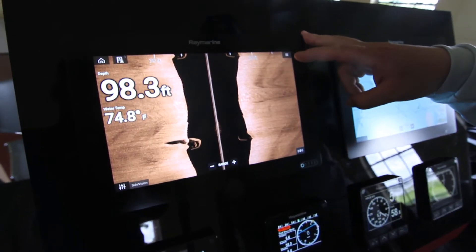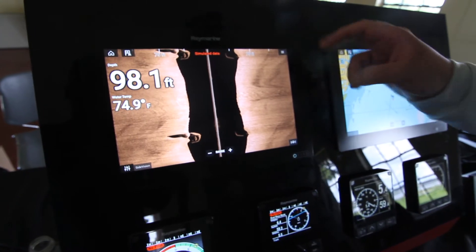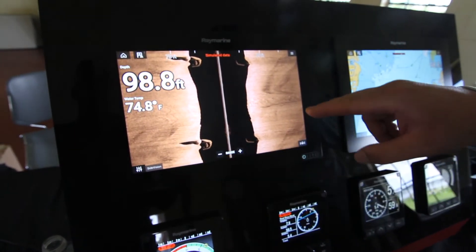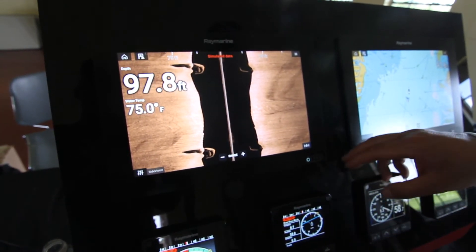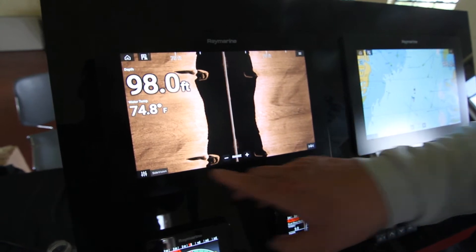Side vision's great because it allows you to look horizontally through the water, both to the left and right sides of the boat. We're looking out to a distance of 150 feet from the center line.